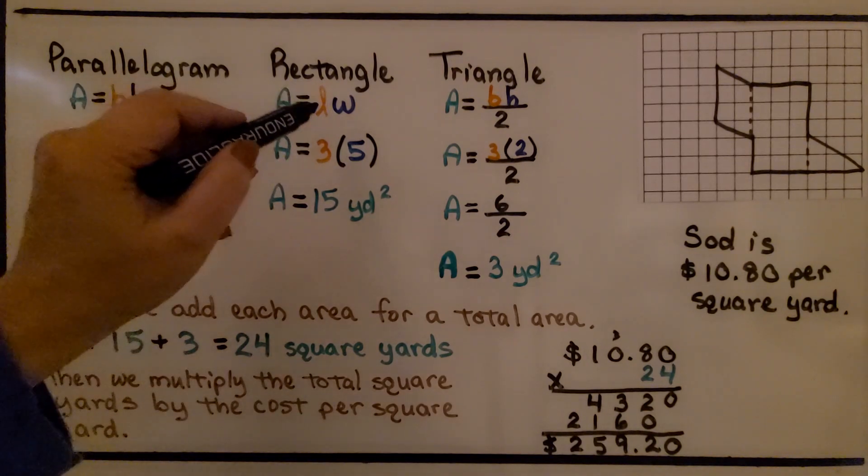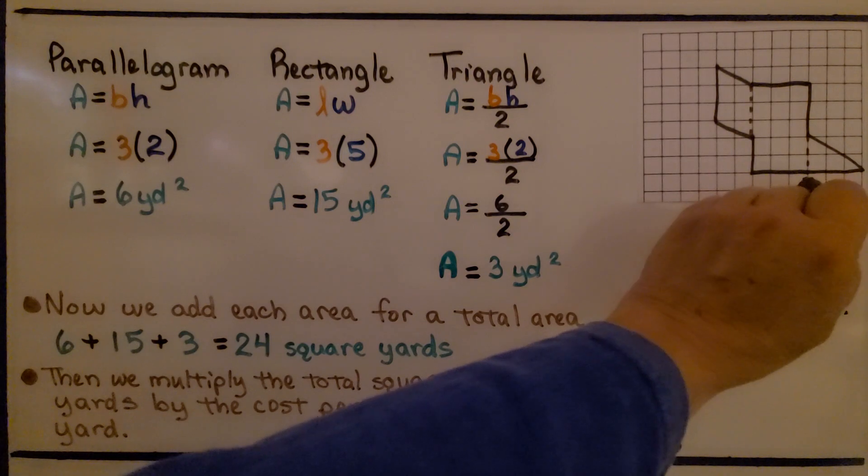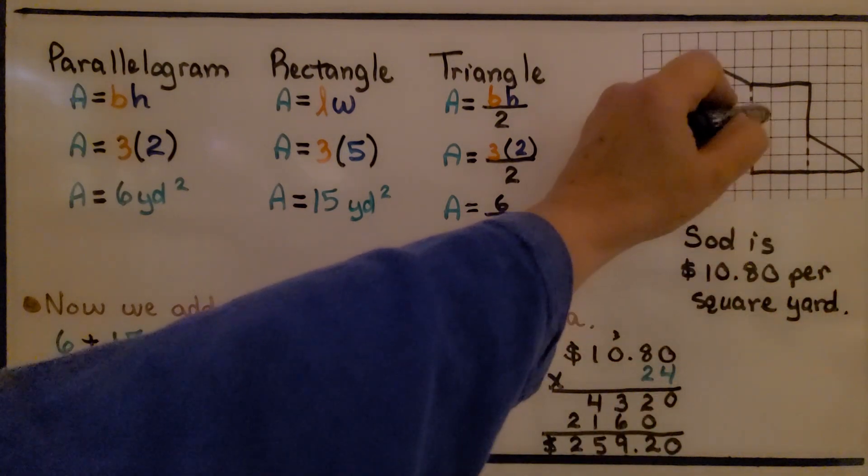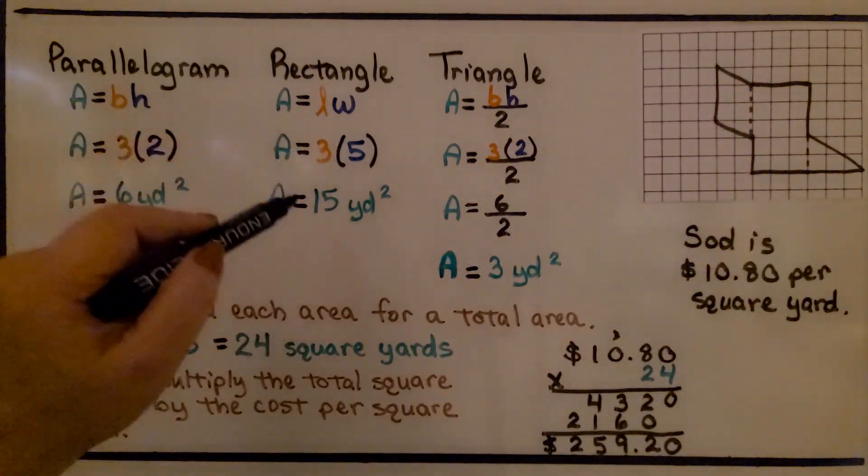For the rectangle, we do length times width. We can do 1, 2, 3 times 1, 2, 3, 4, 5. 3 times 5 is 15.